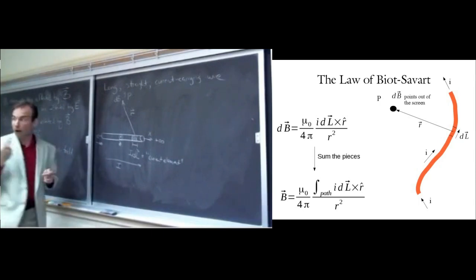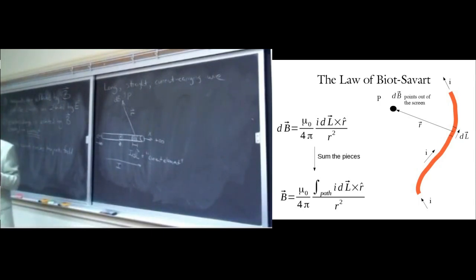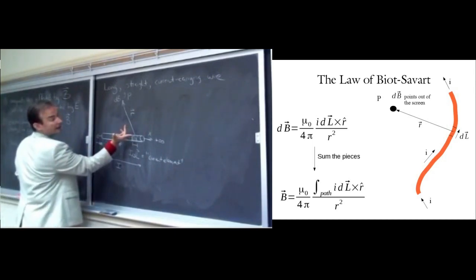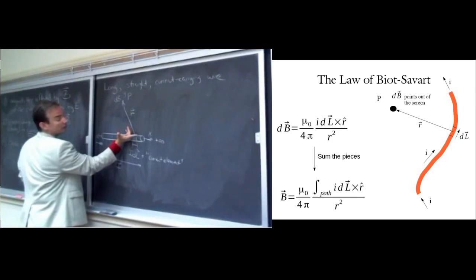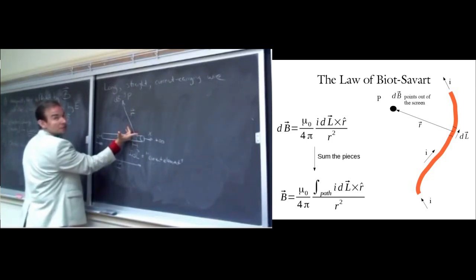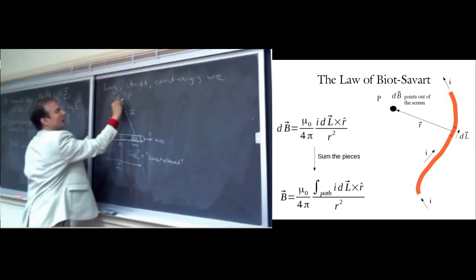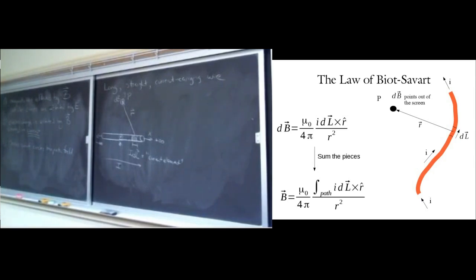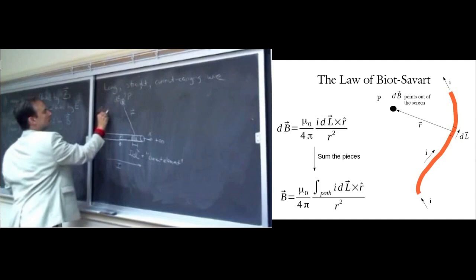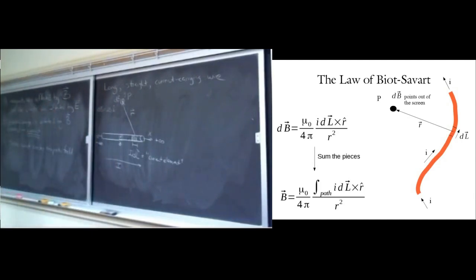For r vector, we break it into Cartesian components. To go from the current element at position x to the origin and then up to point P at height d above the wire: r vector = −x î + d ĵ. x is what we'll integrate over; d is a constant — the perpendicular distance from the wire to point P never changes regardless of which current element we pick. The magnitude r = √(x² + d²) from the Pythagorean theorem, and r̂ = r vector / |r| = (−x î + d ĵ) / (x² + d²)^(1/2).